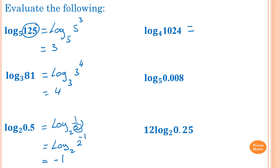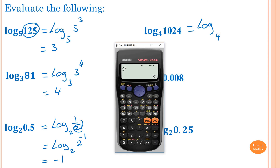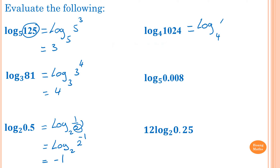Log base 4 of 1024: must be 4 to the power of something. Using the calculator, 4 to the power 4 gives 256, so I try 5 — and 4 to the power 5 gives 1024. So I write 4 to the power of 5 and the answer is 5.